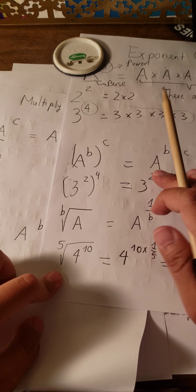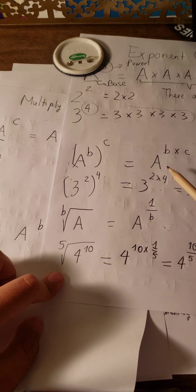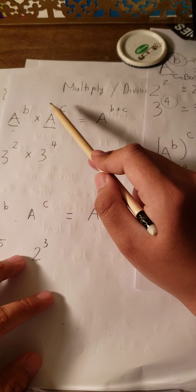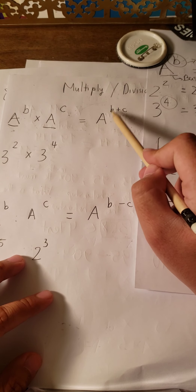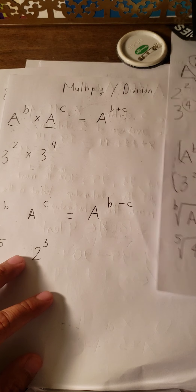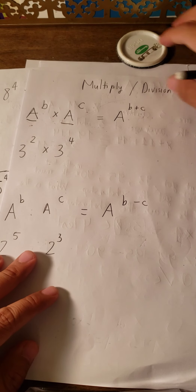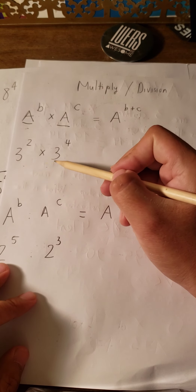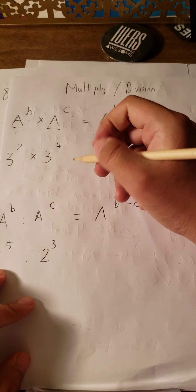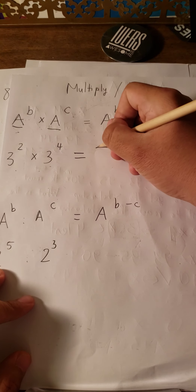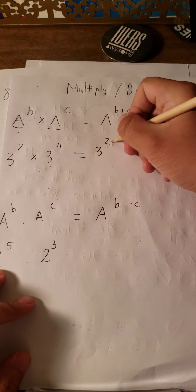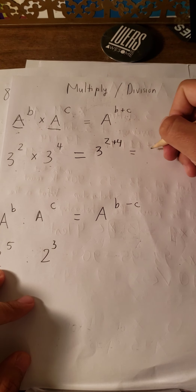Some students don't know how to use these formulas — when they see the expression they mistakenly use P multiplied by C, but that is wrong. It should be P plus C. And remember, we need the same base to use this rule. For example: 3^2 × 3^4 = 3^(2+4) = 3^6.